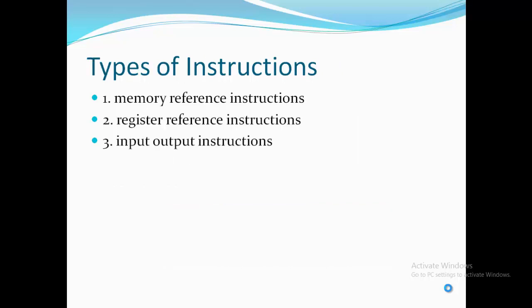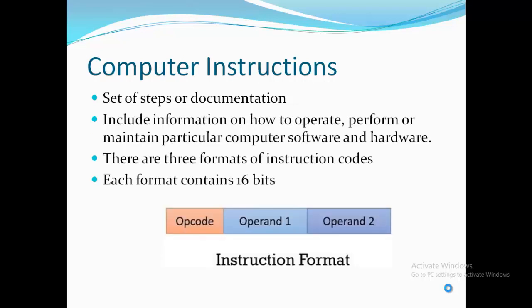The basic computer contains three formats of instruction codes. Each format contains 16 bits. The opcode part of the instruction contains three bits and the meaning of the rest 13 bits depends on the opcode for which the instruction format has to be generated.